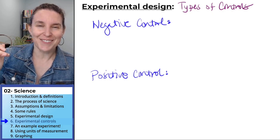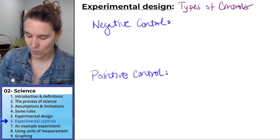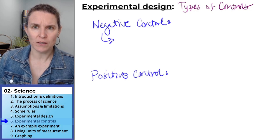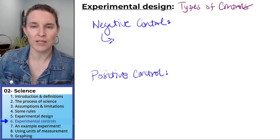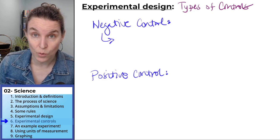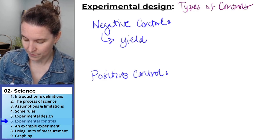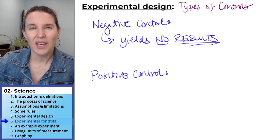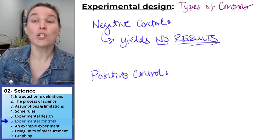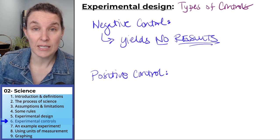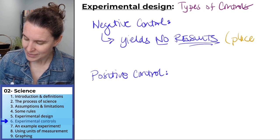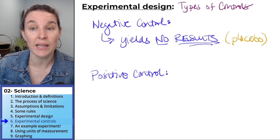I'm going to give you a definition of a negative control and a positive control, and then we're going to practice the whole semester identifying them so that you don't feel like you just can't even visualize what this means. Negative control yields no results. So a negative control is going to be something you're going to expect to yield no results, and I'm going to give you an example. A placebo is an example of a negative control.